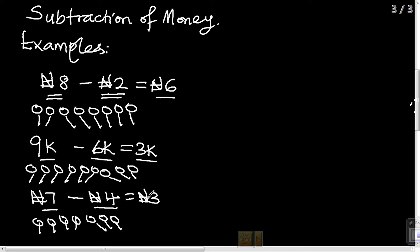Let's take one more example: 6 Kobo minus 2 Kobo. Let's count as 6: 1, 2, 3, 4, 5, 6, and 2. Subtract 2: 1, 2. Let's count the ones we have left: 1, 2, 3, 4. We have 4 Kobo left.